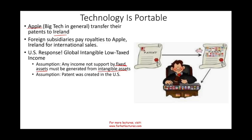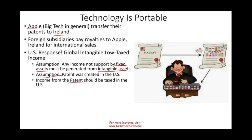Based on these assumptions — which is a very creative idea to tax companies — it's a preemptive tax. It's like: we're going to assume it's a patent, we're going to assume it was created in the U.S., therefore we're going to extend our hands and tax you. Notice the controlled foreign corporation previously only had to worry about subchapter F income. Now that's no longer the case — they have to worry about all income.